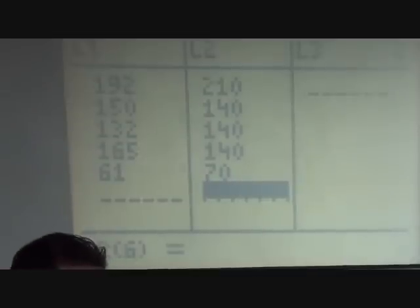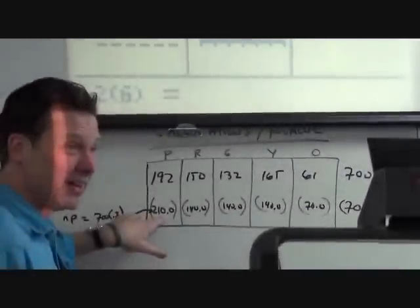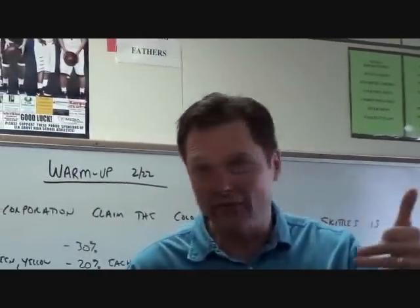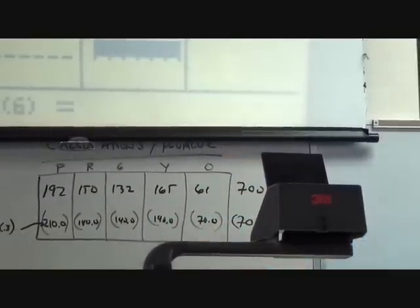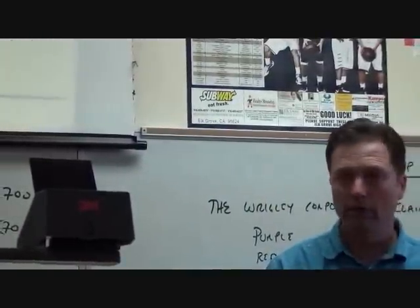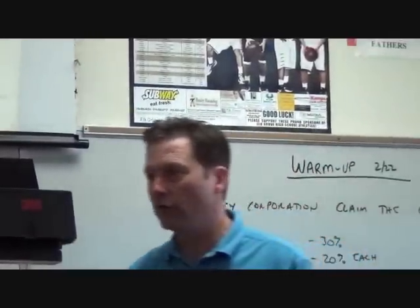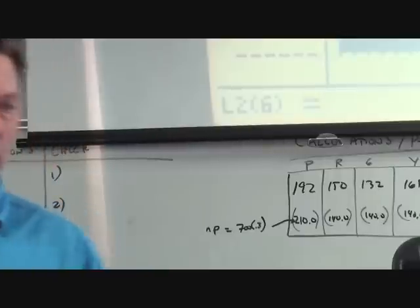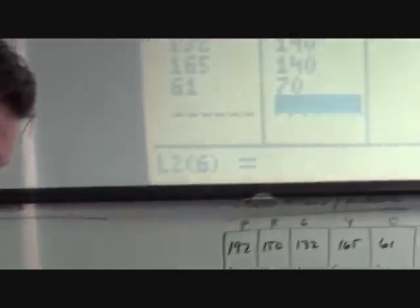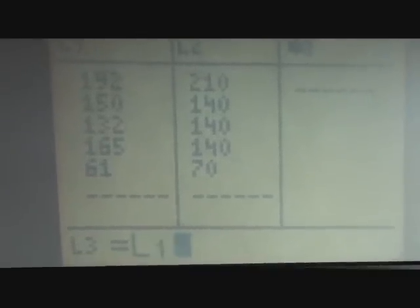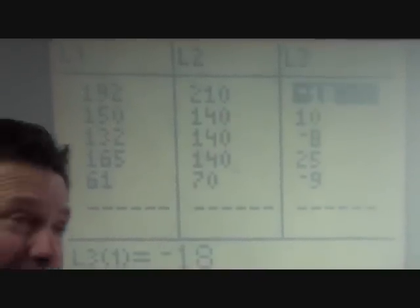Here's what I got versus what I was supposed to get — is that far enough away? If I flip a coin 100 times, I'm supposed to get 50 heads. If I get 51, is that a big deal? Not so much. If I got 90, would that be a big deal? Yeah. So that's what we're trying to figure out. I want to figure out how different these are — let's subtract them. Go over to L3, take L1 minus L2, and that's how different they are.